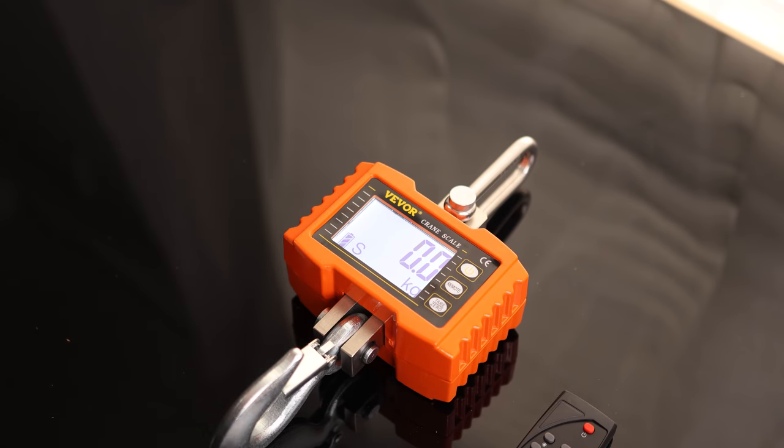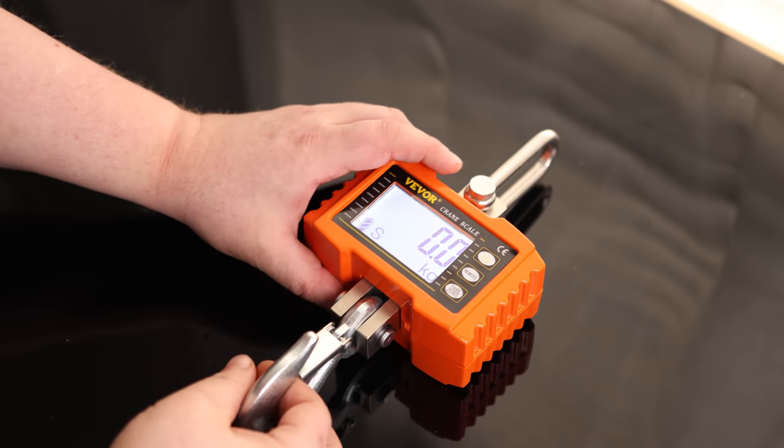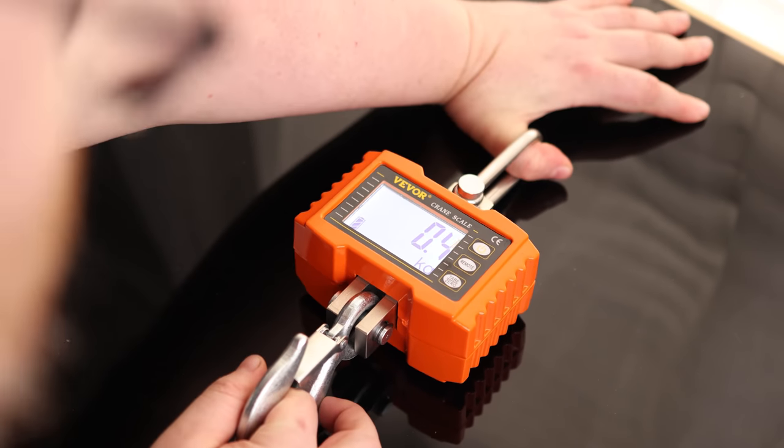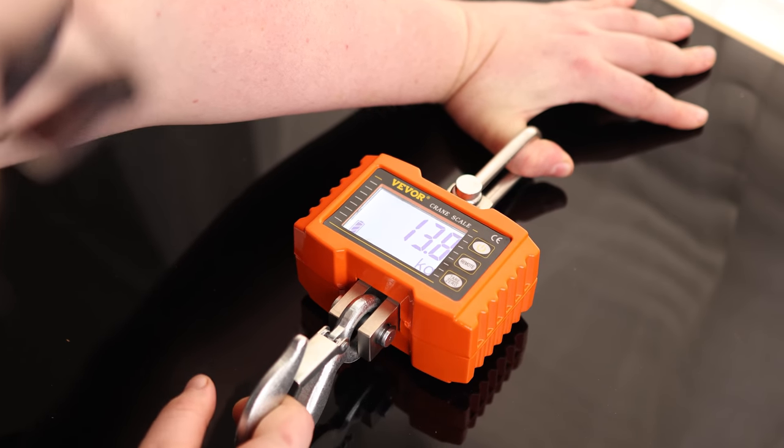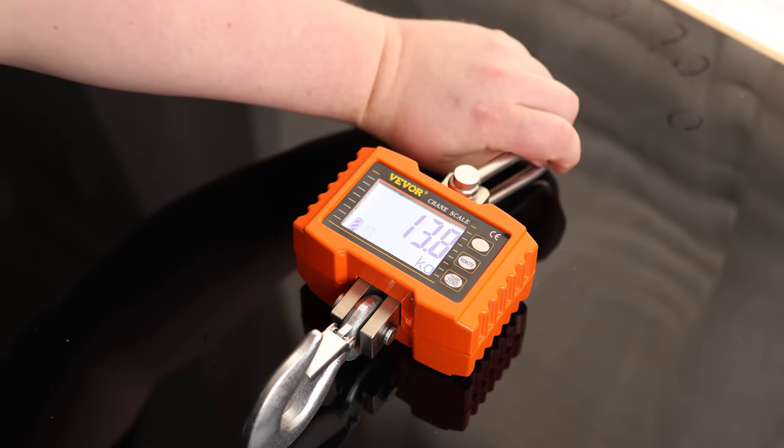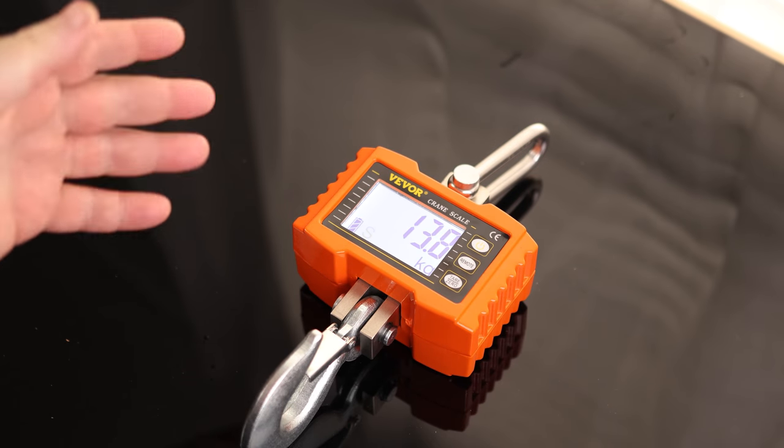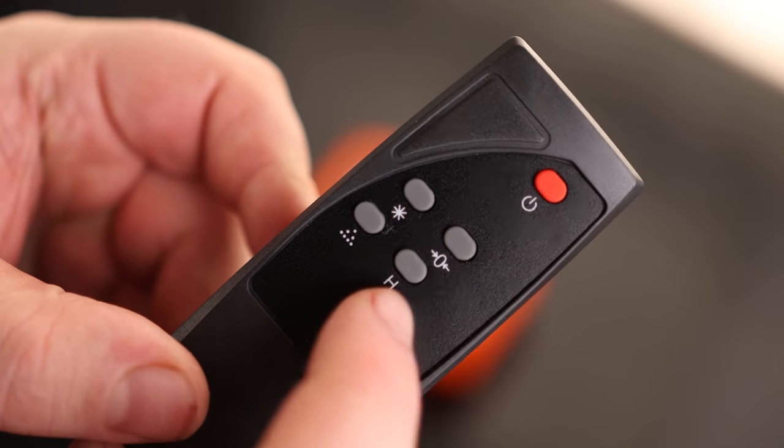It's got a battery level indicator. We can see that it is on kilograms. So if I was to pull on this and then I hit hold, you can see that is going to hold that weight. So I can get an accurate reading on that thing without it bouncing up and down.